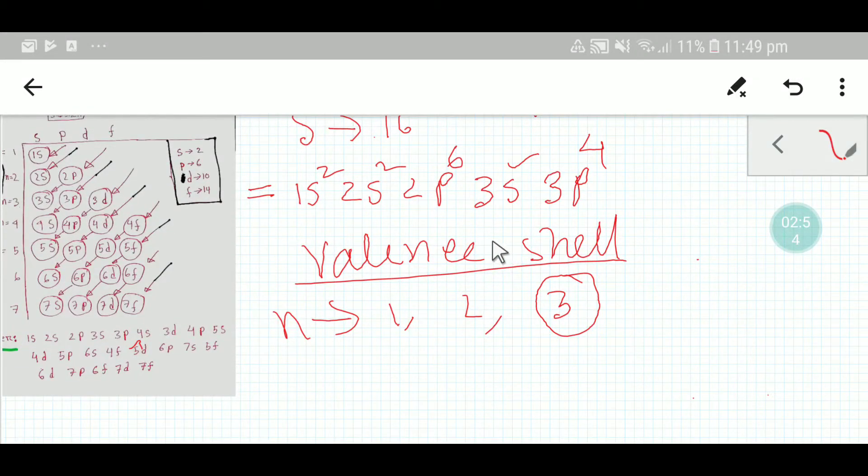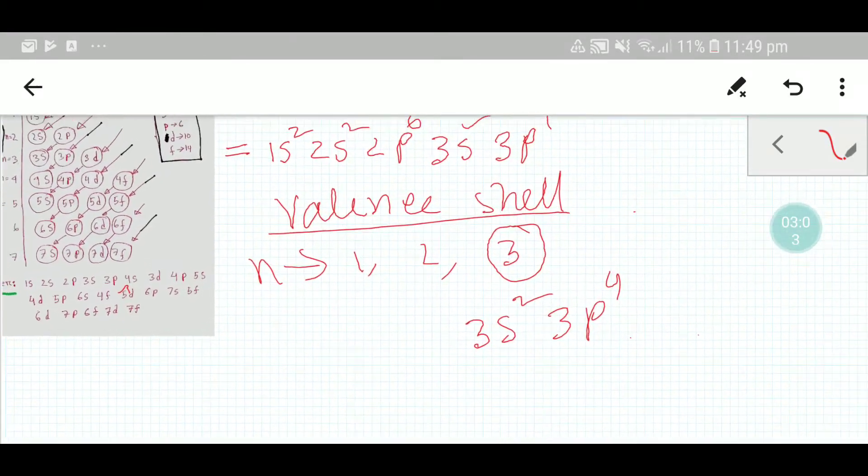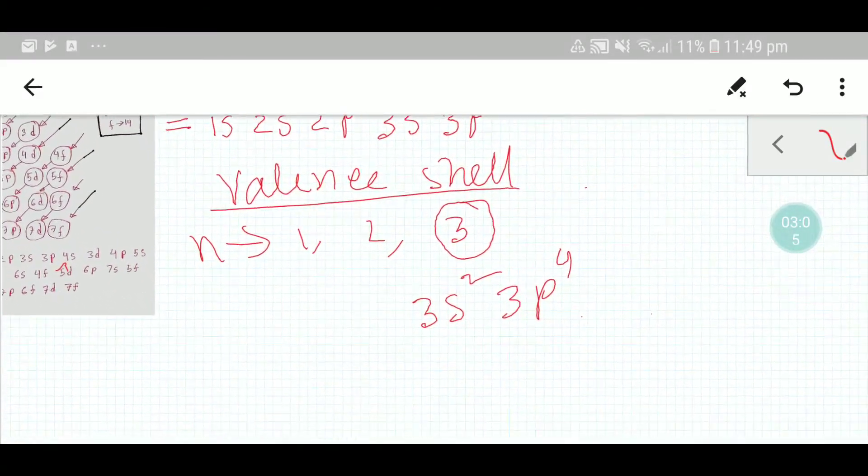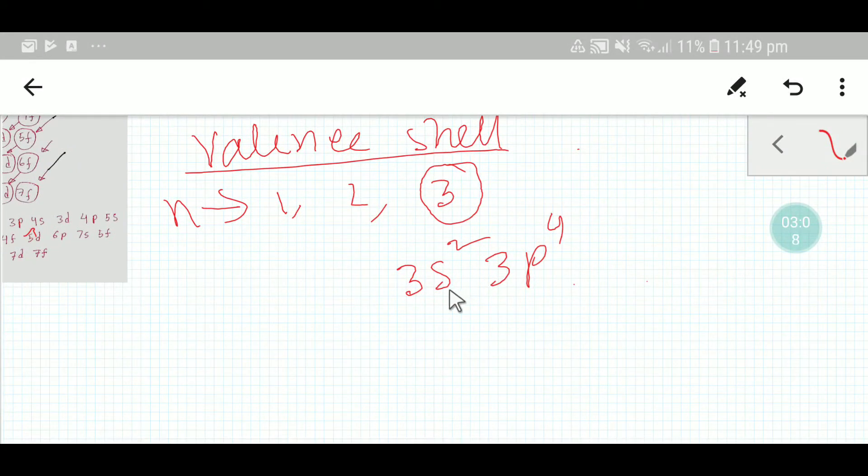Okay, so here the valence shell is 3s² and 3p⁴. This is the valence shell, and you know that the electrons of valence shell are called valence electrons. So sulfur has 2 plus 4, which is 6 valence electrons.